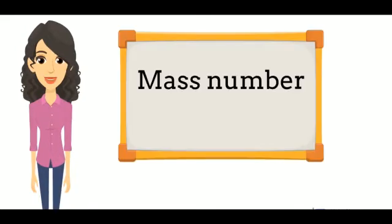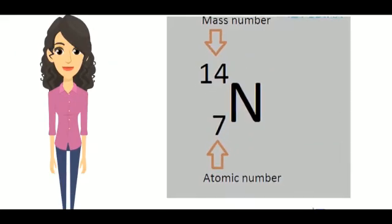Mass number is the number of protons plus the number of neutrons present in the nucleus. For example, nitrogen has mass number 14.